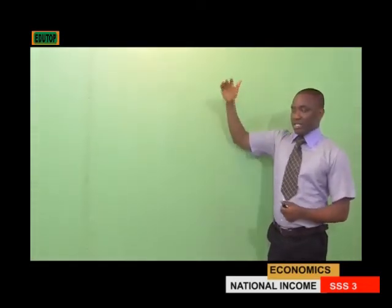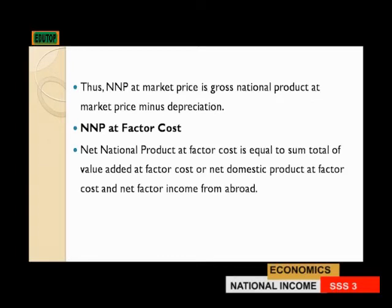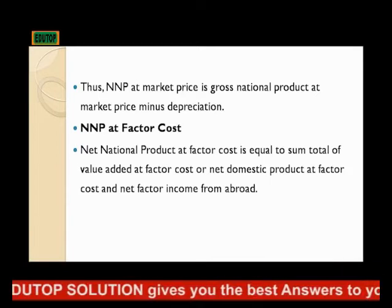Gross national product minus the value of depreciation will give us the value of net national product. Net national product at market price is gross national product at market price minus depreciation. Then we have net national product at factor cost, which is equal to the sum of value added at factor cost, or net domestic product at factor cost, and net factor income from abroad.